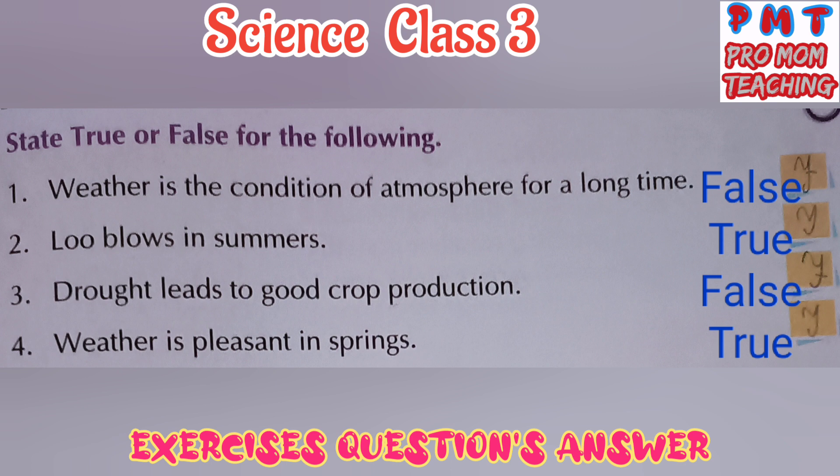State true or false for the following. First, weather is the condition of atmosphere for a long time — False. Second, Loo blows in summers — True. Third, drought leads to good crop production — False. Fourth, weather is pleasant in spring — True.